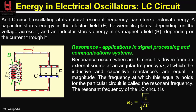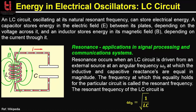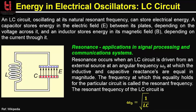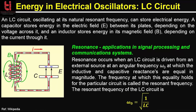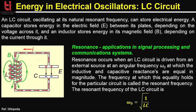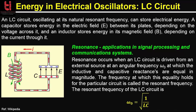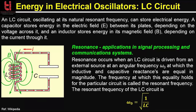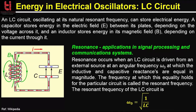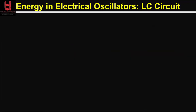A series resonant circuit provides voltage magnification, and a parallel resonant circuit provides current magnification. The resonant frequency of the LC circuit can be expressed as ω₀ = √(1/LC), where L is the inductance in Henrys and C is the capacitance in Farads, and angular frequency ω₀ has units of radians per second. If you want the equivalent frequency in Hertz, it is simply ω₀/(2π) = 1/(2π√(LC)).